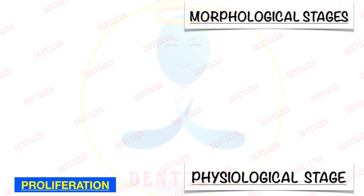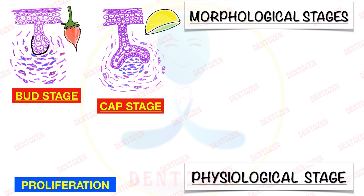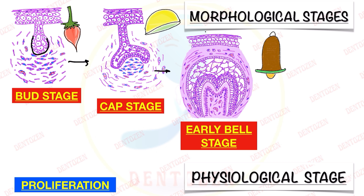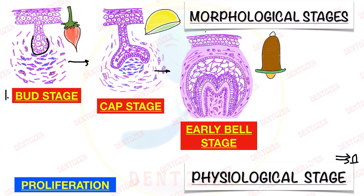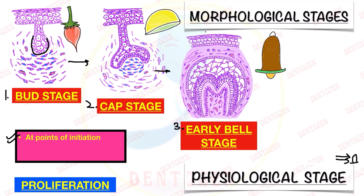The second stage is proliferation — division of cells — occurring where initiation started. With proliferation, the shape of the bud changes into a cap-shaped structure and eventually into a bell-shaped structure in early bell stage and then late bell stage. However, in late bell stage, cell division stops as cells get differentiated into ameloblasts and odontoblasts. So proliferation is seen in bud stage, cap stage, and early bell stage, but not in late bell stage. Because of proliferation, there is a change in the size and proportion of the tooth germ.